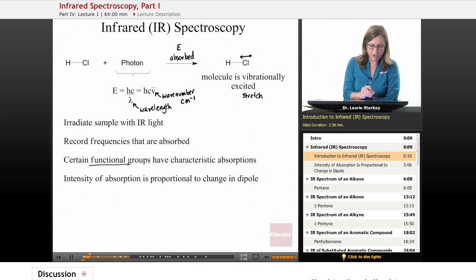It turns out that certain functional groups have characteristic absorption. For example, an OH group in your molecule absorbs a certain wavelength of infrared light. If we see an absorption at that wavelength, it tells us that our molecule has an OH group on it. IR analysis is a way for analyzing for functional groups.